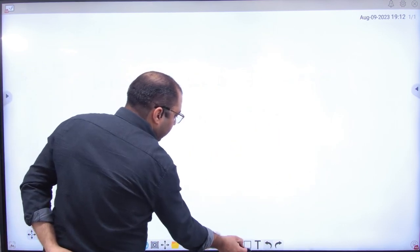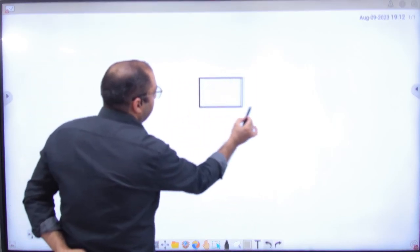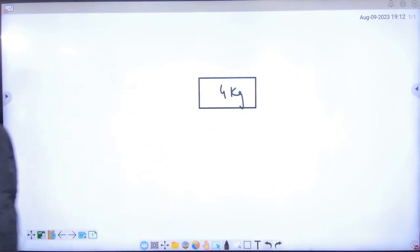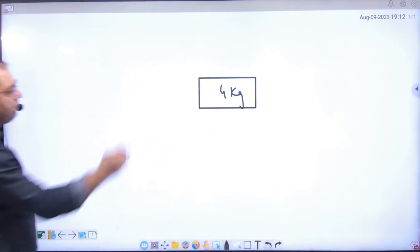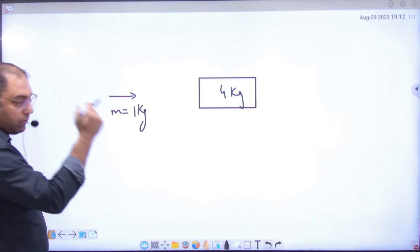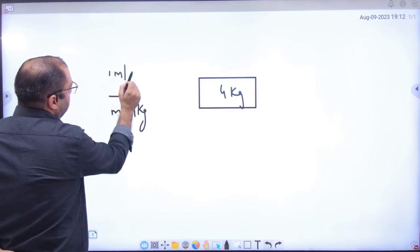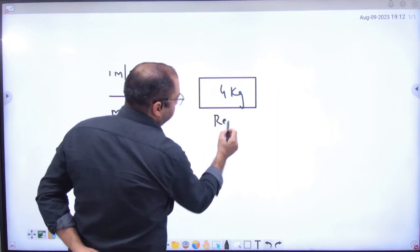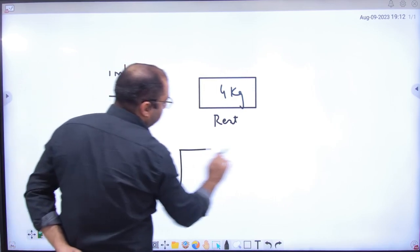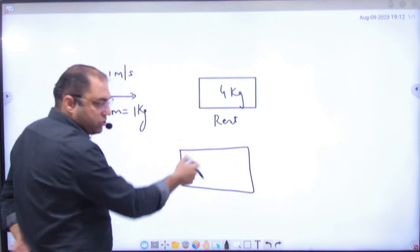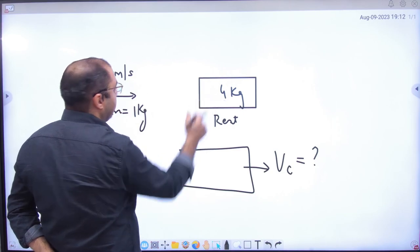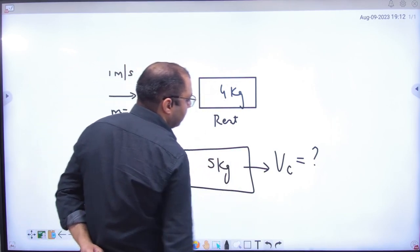Another example. Let us suppose a block is 4 kg. A bullet whose mass is 1 kg. Bullet's velocity is 1 meter per second. Block is on rest. Bullet hits the block and this is embedded in the block and they move with a common velocity. So the mass will be, when the bullet is in the block, it will be 5 kg. What will the common velocity be?